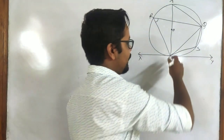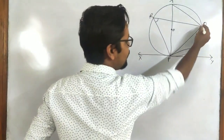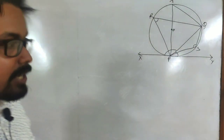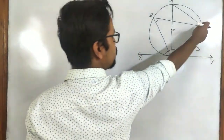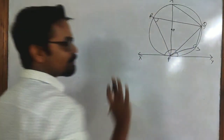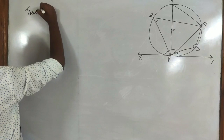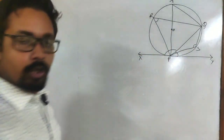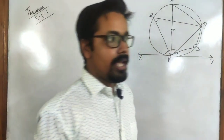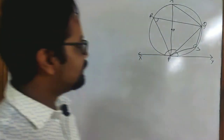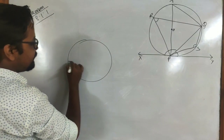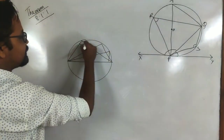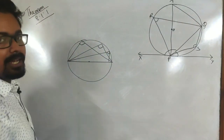So we have chord PQ. Angle PRQ is one angle on one segment and angle PSQ is another angle on the other segment. Angle QPY and angle QPX are the two angles formed by the chord with the tangent. We have to prove that angle QPY equals angle PRQ, and that angle QPX equals angle PSQ. This is theorem 8.1.1.